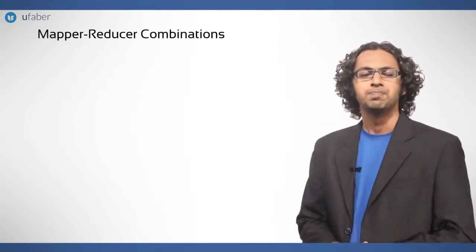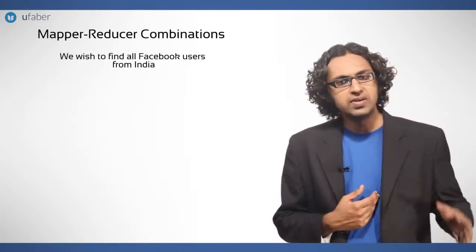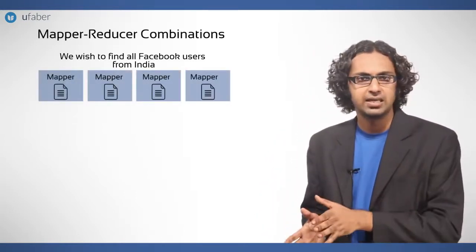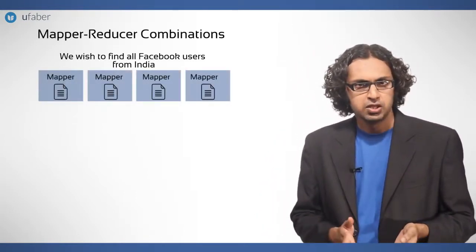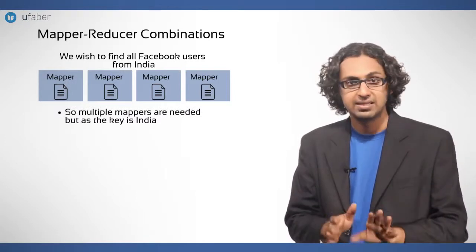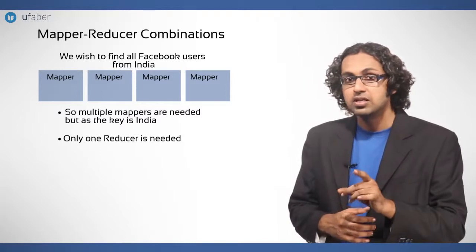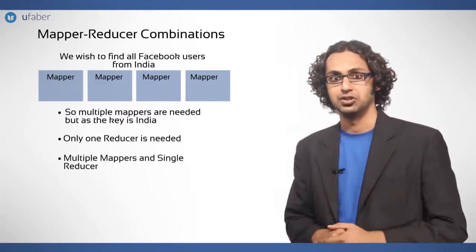Let us consider another case. We wish to find all Facebook users from India. Now all the mappers will work on their data part and filter out the users from India. So multiple mappers are needed but as the key is India, only one reducer is needed. So this type is of multiple mappers and single reducer.